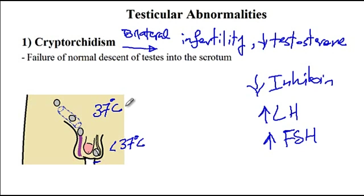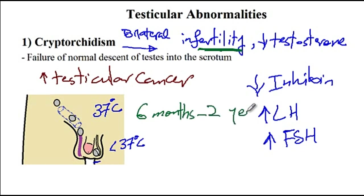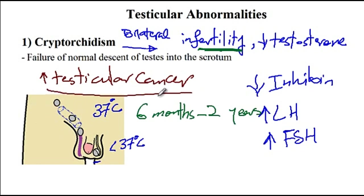The other complication that can arise with cryptorchidism is an increased risk of testicular cancer. In terms of treatment, it is recommended to surgically reposition the cryptorchid testis into the scrotum in order to preserve fertility, and the timing is recommended to be between six months to two years of age. Note that after repositioning there would be decreased risk of testicular cancer, but the risk is still more than the general population.